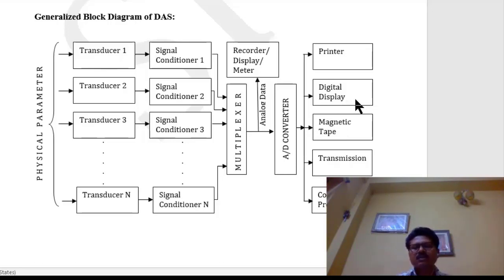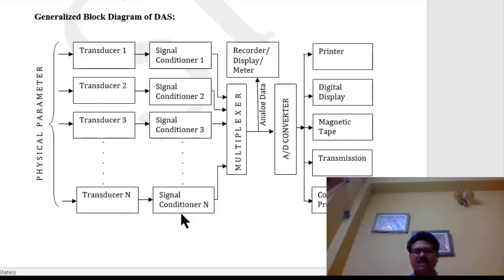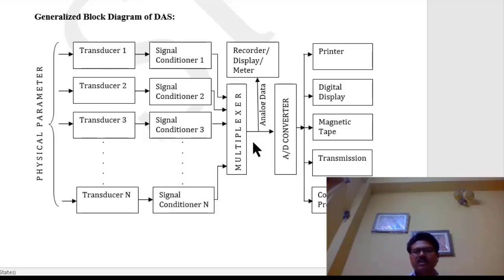After the A-to-D converter, different types of final devices can be used: for display, any display device; for storing, a computer or other storage device; and if needed, the data can be transmitted to other users or other locations. So in the data acquisition system, the main parts are: the transducers to measure the parameters, signal conditioning for each transducer, a multiplexer, and an A-to-D converter before the final devices. This is the generalized block diagram of a data acquisition system.